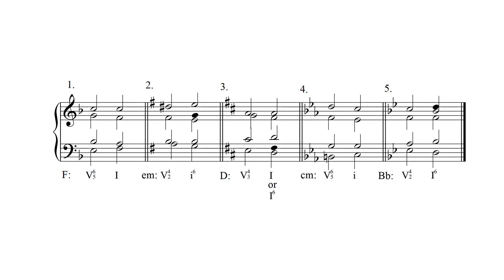Next, resolve the leading tone, which in this example is the E in the bass voice — it is moving up by step to F. Next, keep the common tone, which is the C in the soprano voice. Finally, move the remaining pitch, which is the chordal fifth of the dominant seventh chord, down by step to F.